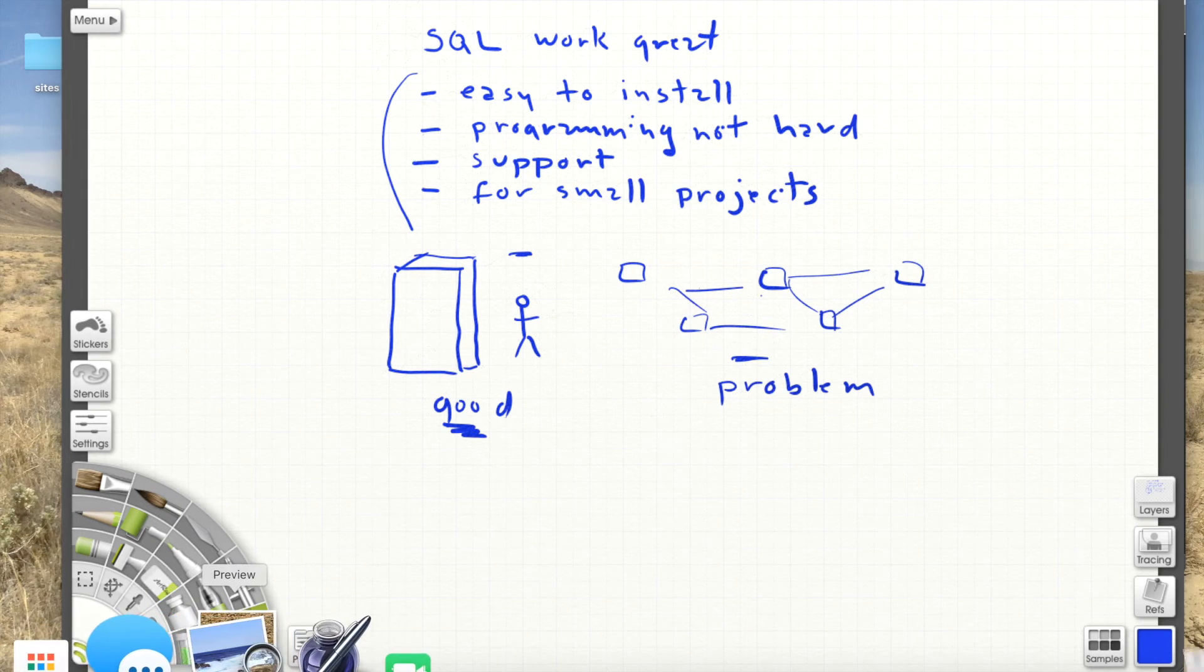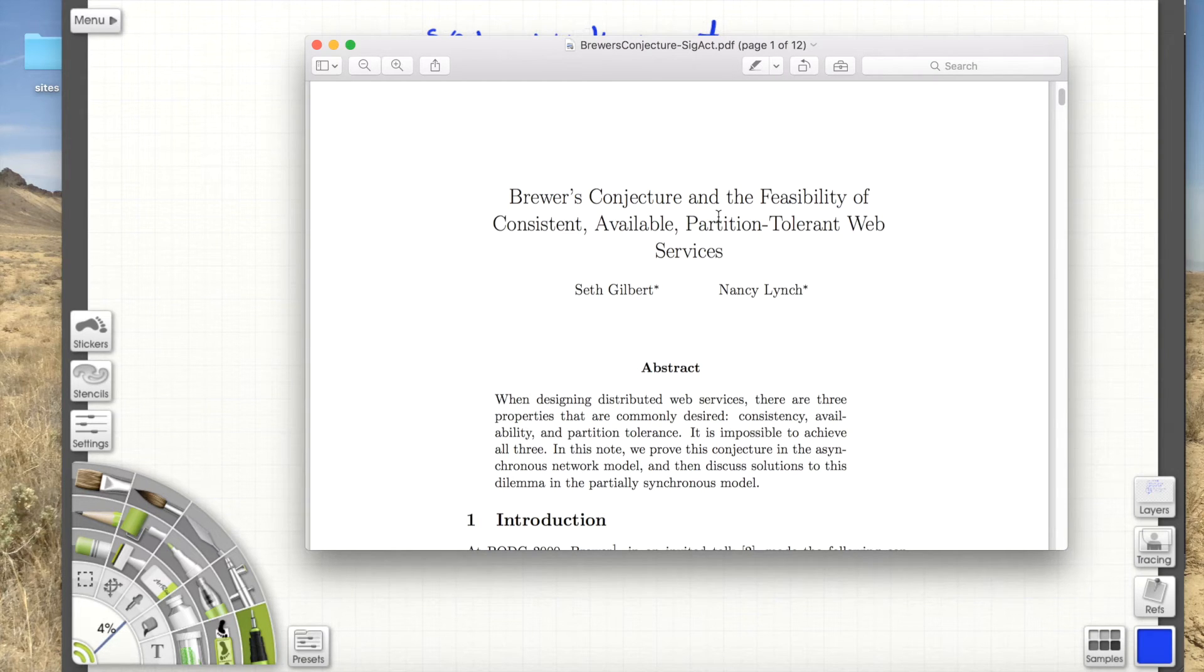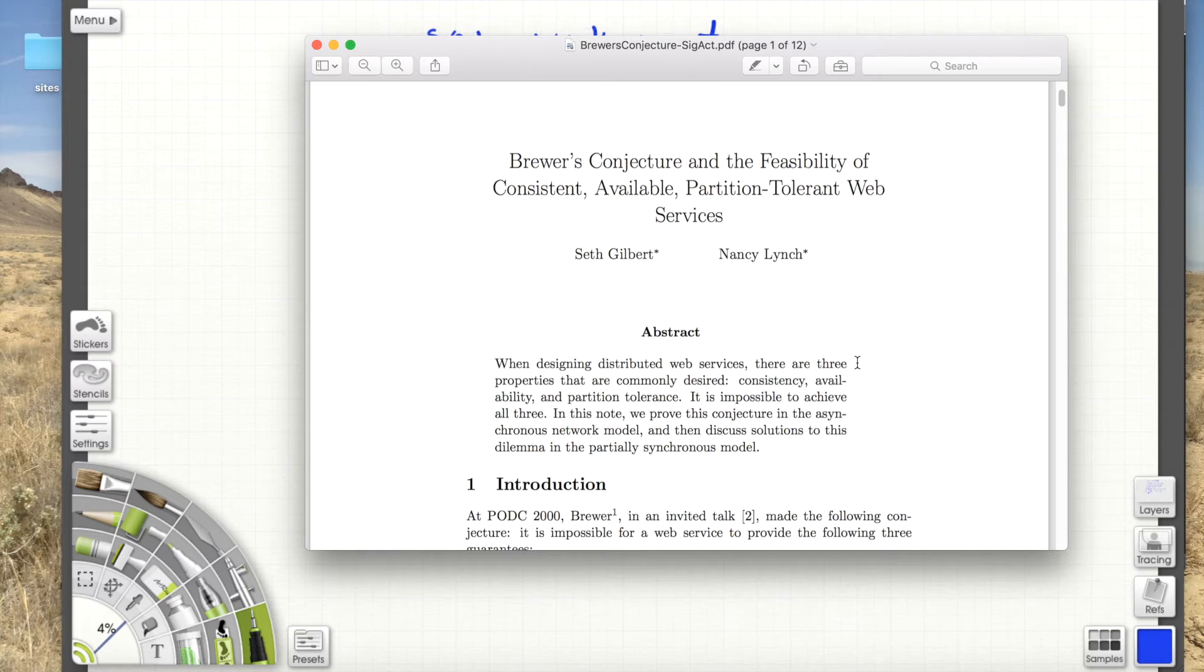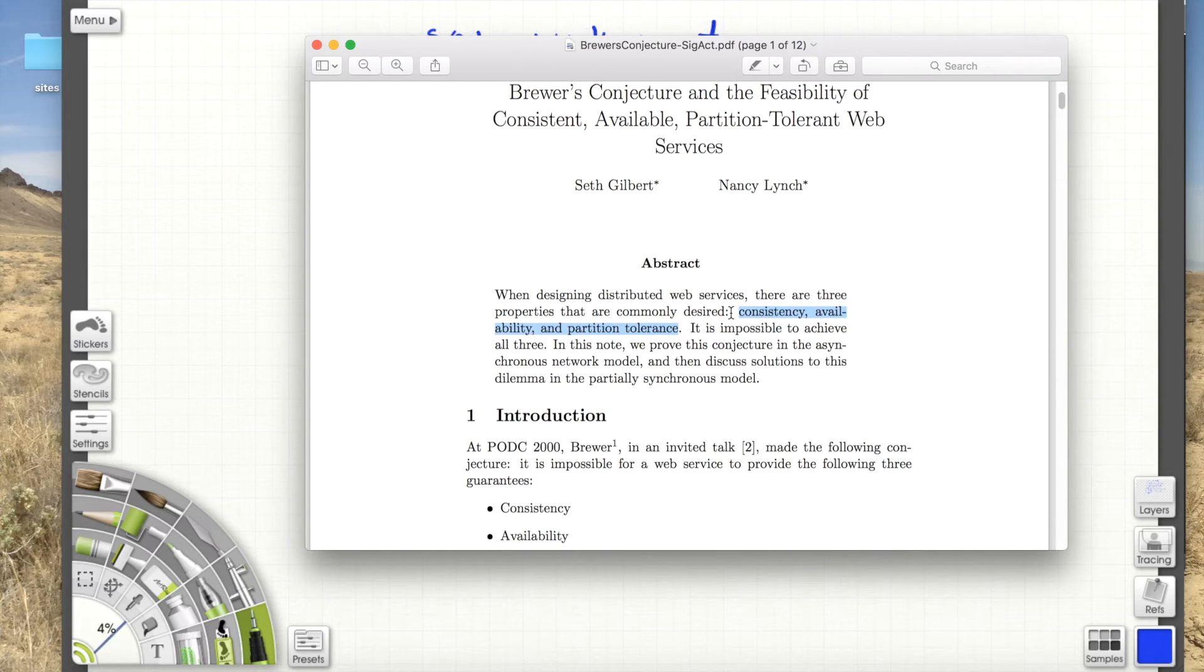Let me bring up this example. There was this paper a while ago. In 2000, initially, I think this version of the paper might be 2012, somewhere in there. This famous paper, this Brewer's conjecture paper, this paper proved that there are three properties that are commonly desired: consistency, availability, and partition tolerance. And what they argue is that you can have two of these, but you can't have all three. So you can develop servers that have two of these, but you can't have all three. So this is a real key critical paper in this area.